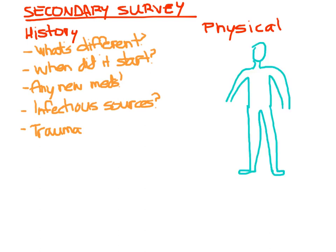Now let's move to the physical exam head to toe. Start with vital signs: are they tachycardic, bradycardic, is their respiratory rate off, are they hypotensive, do they have a fever? These are great help in narrowing the differential. Then look at neurologic status: are they alert, do they notice you're there, are they answering questions, can they stay focused or awake? Do a neuro exam — any focal findings like motor deficits, not moving their leg, or cranial nerve problems?